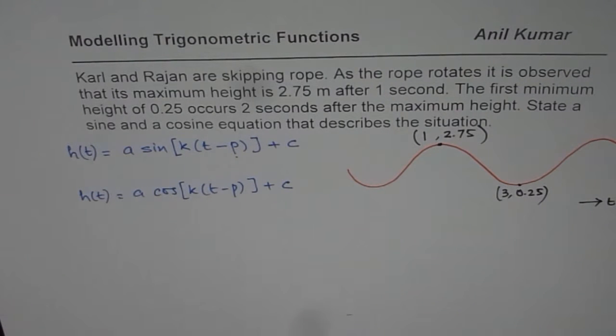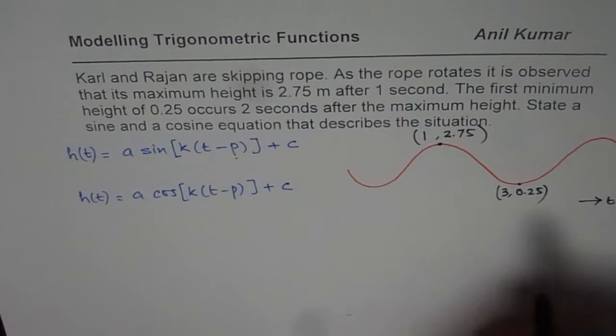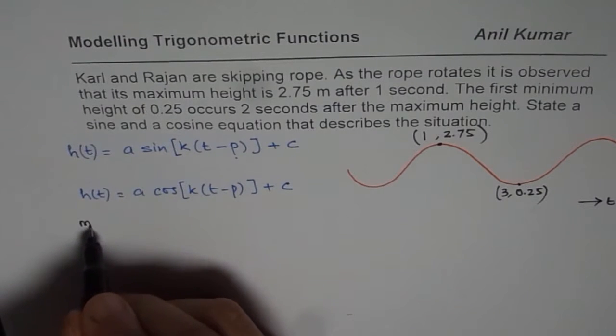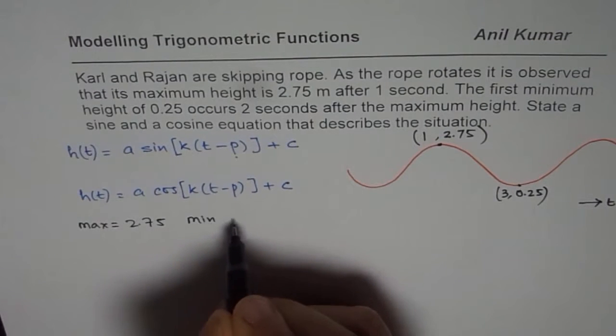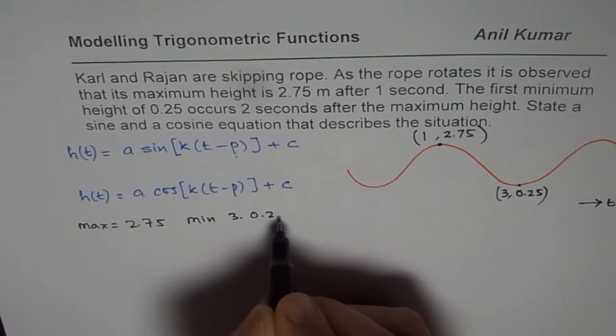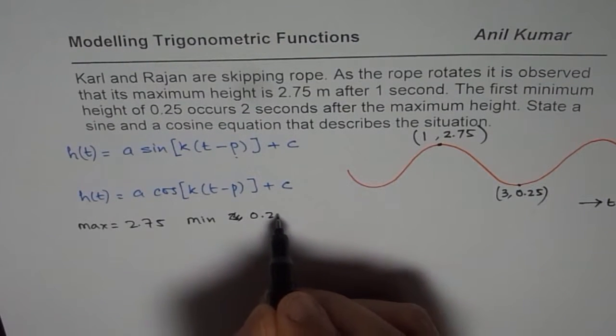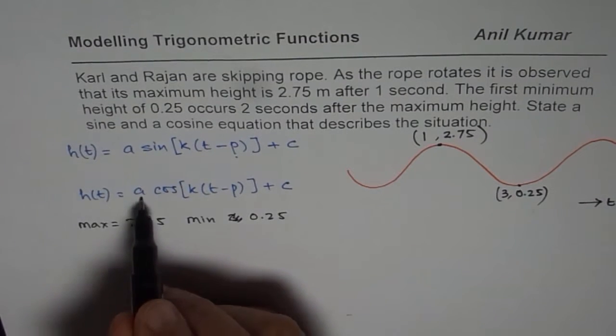Now let us follow the regular steps to solve. The regular steps are: first, write down maximum and minimum values. We have maximum value of 2.75, minimum value of 0.25. These are values, the height. From maximum and minimum, you can calculate amplitude and axis, that means A and C.